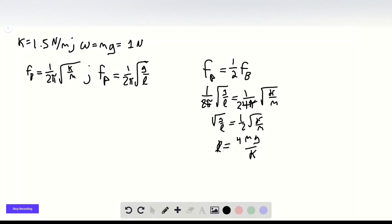So we know that MG equals W, so our weight given up here equals 1 newton. So this is the length of the stretched spring due to this 1 newton force.